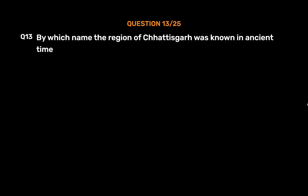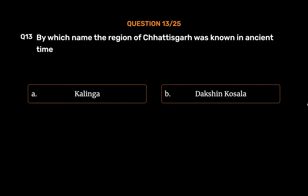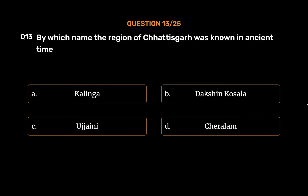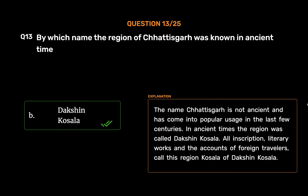Question No. 13: By which name was the region of Chhattisgarh known in ancient times? Option A: Kalinga. Option B: Dakshinakosala. Option C: Ujjaini. Option D: Cheralam. The correct answer is Option B: Dakshinakosala. The name Chhattisgarh is not ancient and has come into popular usage only in the last few centuries. In ancient times the region was called Dakshinakosala. All inscriptions, literary works, and accounts of foreign travelers call this region Kosala or Dakshinakosala.